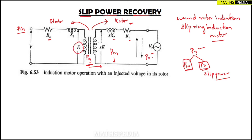One more thing: the stator-to-rotor turns ratio should be unity — that means one. PR, the slip power, is the power absorbed by the voltage source VR. So I can control PR by controlling the magnitude and sign of VR.